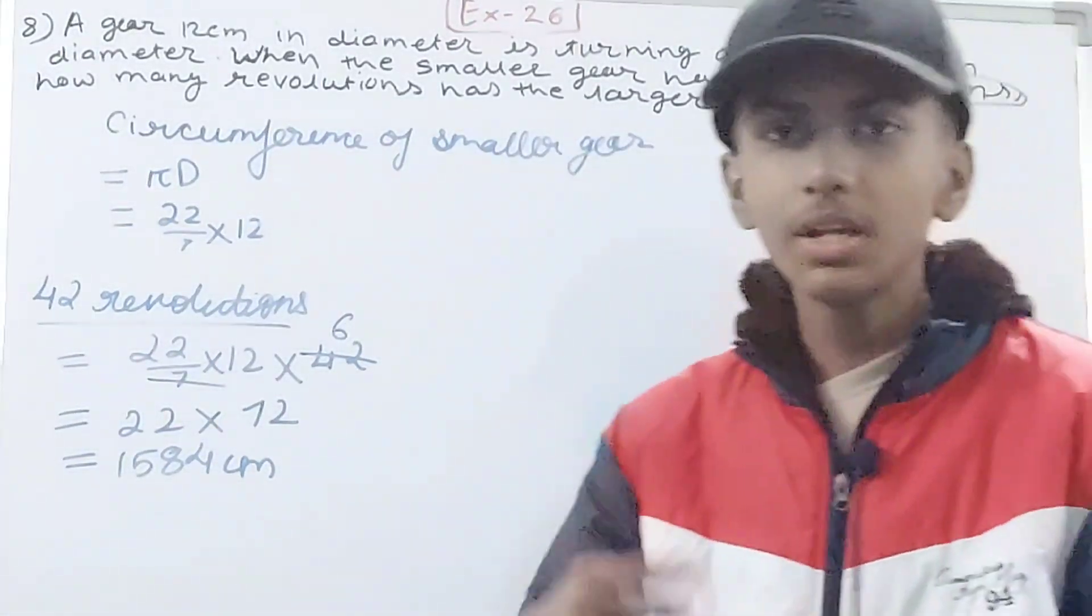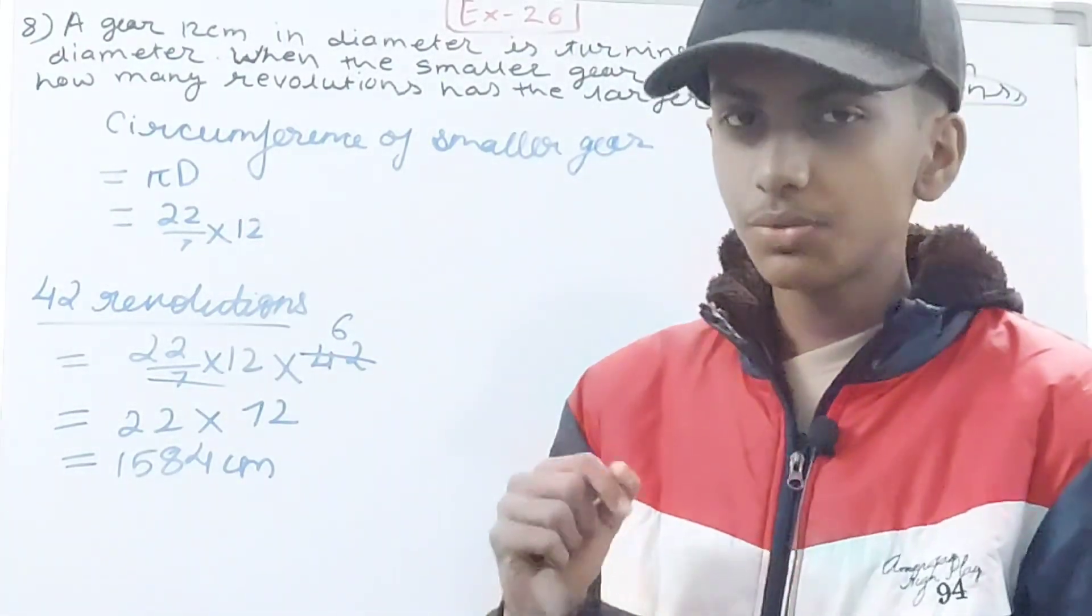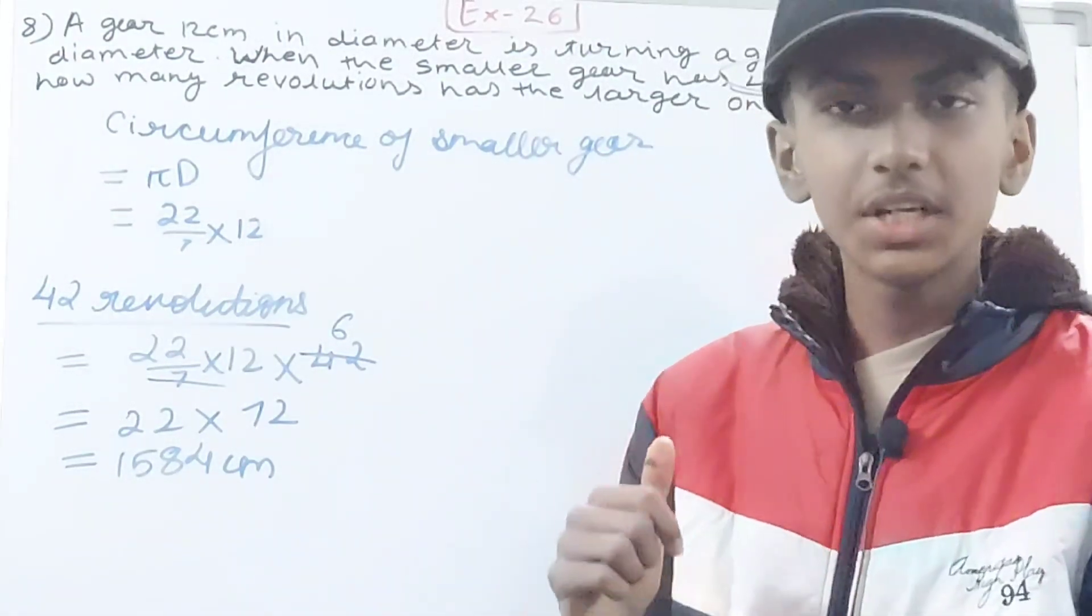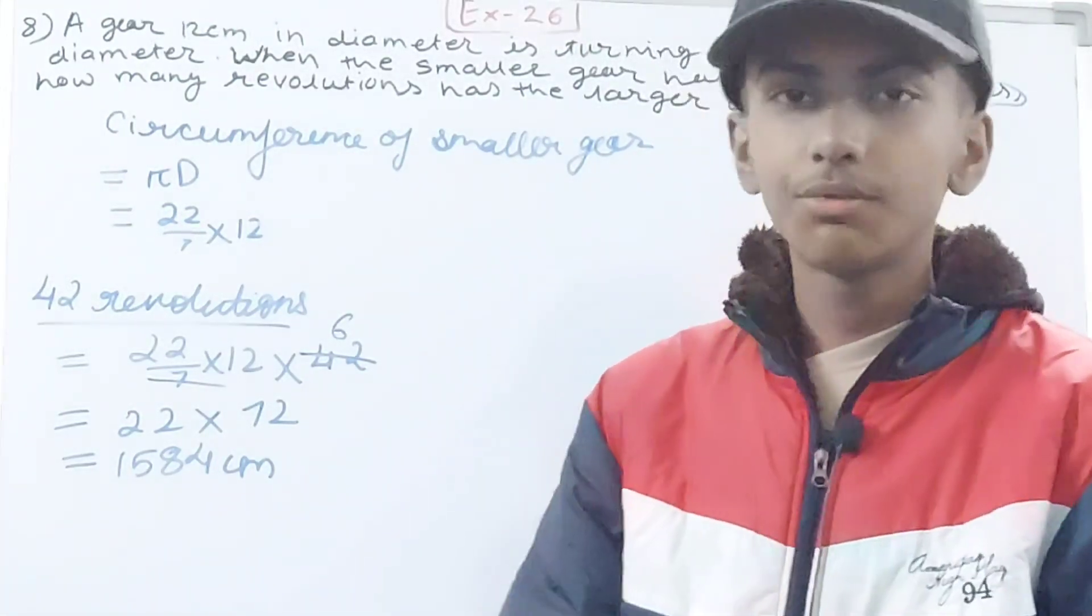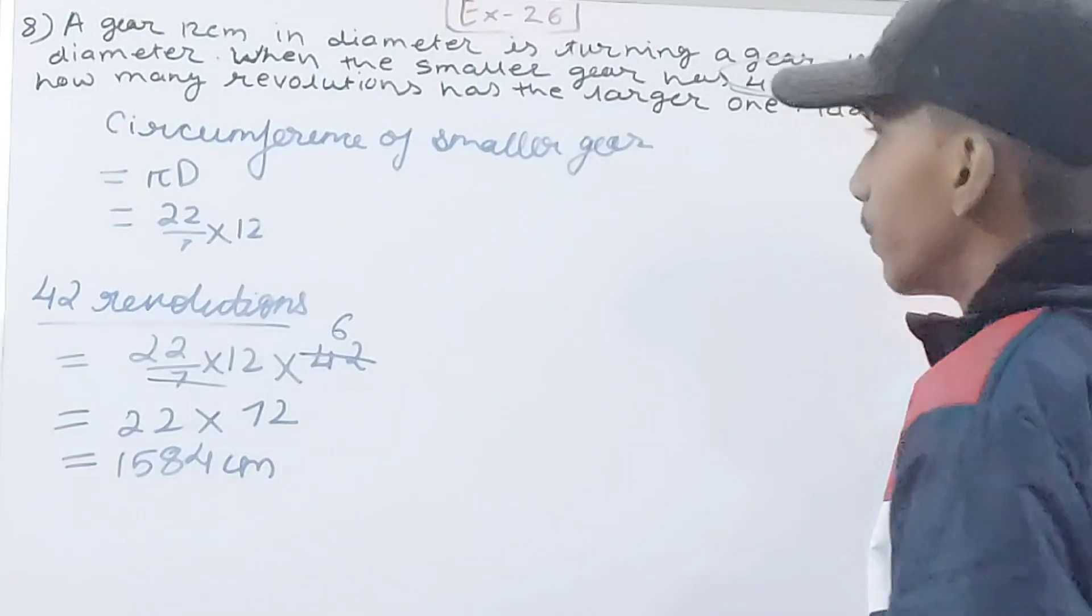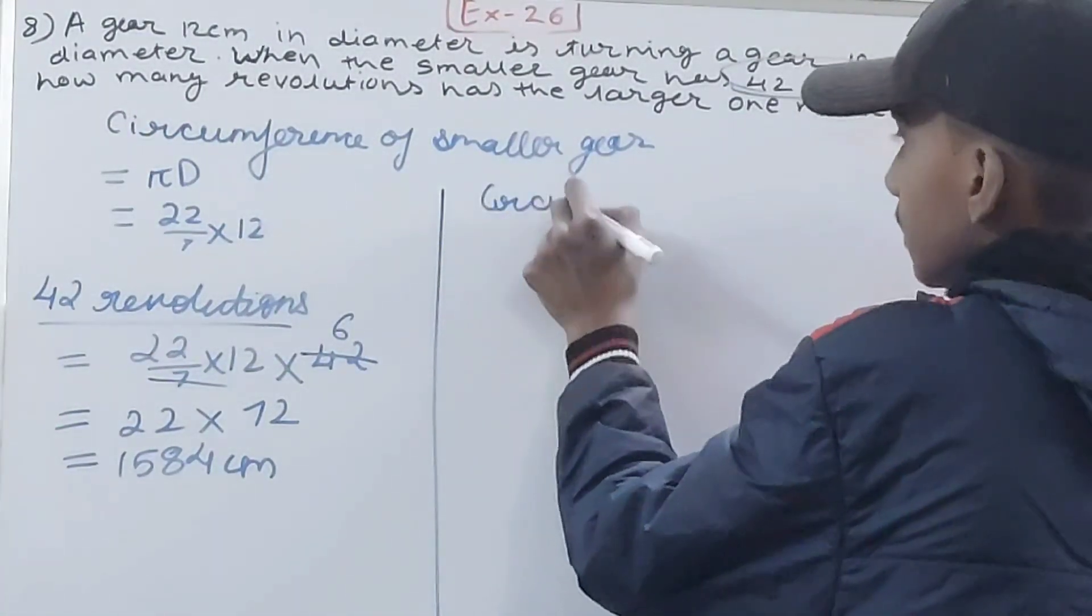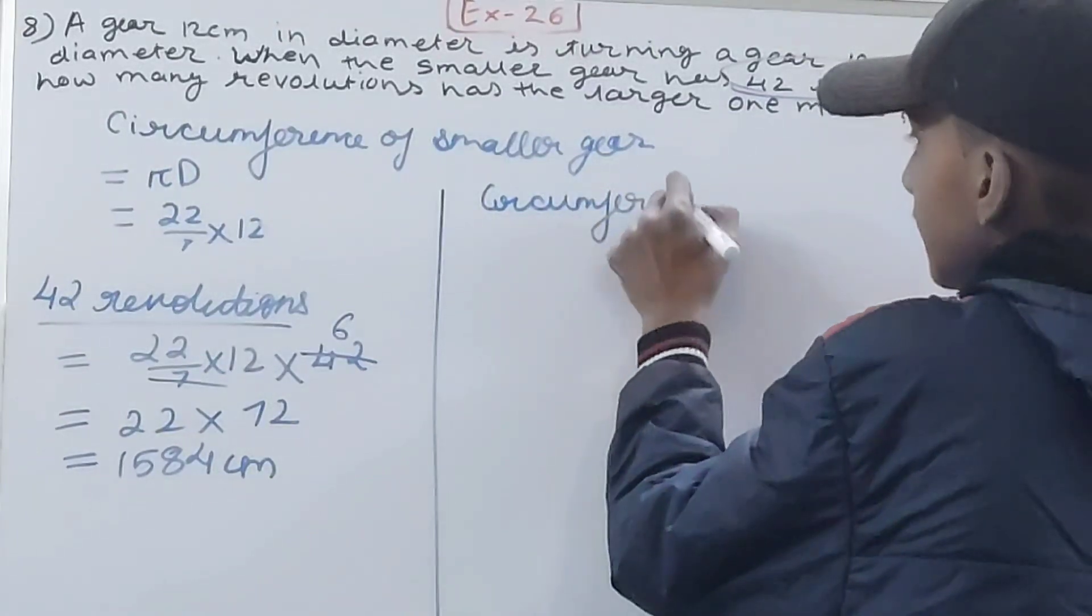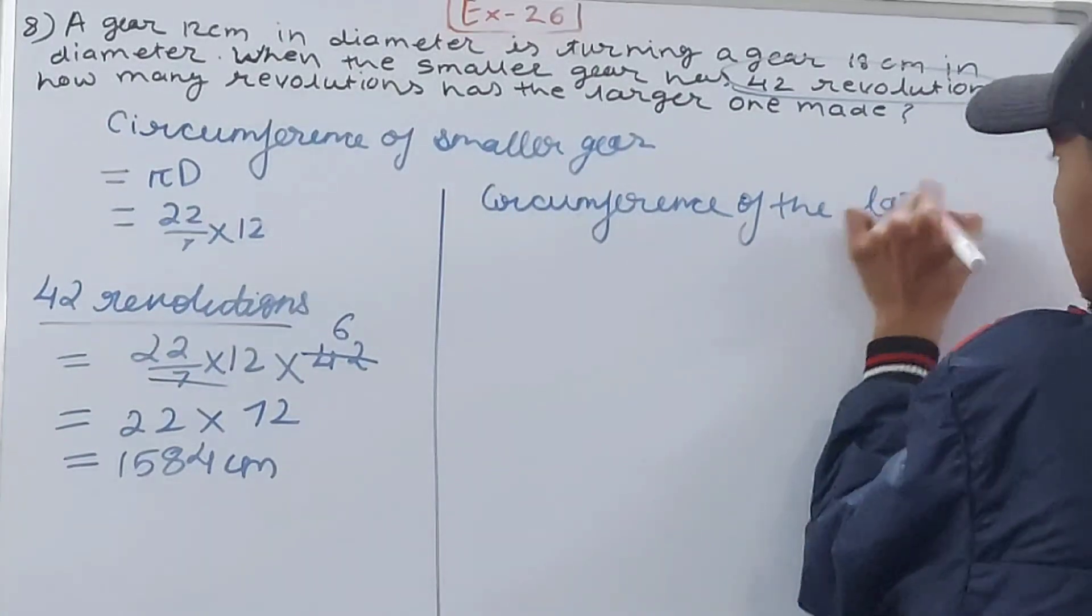The distance will be the same. The distance will be the same. Only thing in the bigger gear will be that number of revolutions will be less, and circumference will also change. So now we come to the circumference of the larger gear.